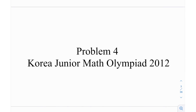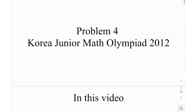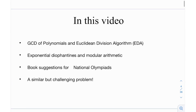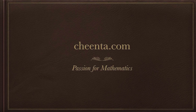This is problem number four from the Korea Junior Math Olympiad in the year 2012. In this video we're going to be looking at the GCD of polynomials and the Euclidean division algorithm, after that exponential Diophantines and modular arithmetic, then seven book suggestions for national olympiads, and at the end a similar challenging problem.